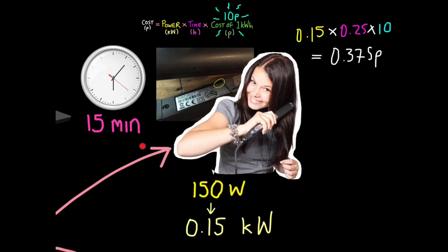Now remember 15 minutes is a quarter of an hour. So 1 hour is given the value of 1, so a quarter must be 0.25, just divide 1 by 4. Sometimes you might need to convert minutes into hours. To do that you just need to divide your minute value by 60, because there's 60 minutes in an hour.